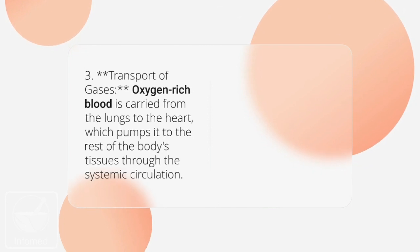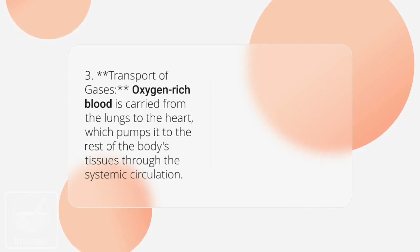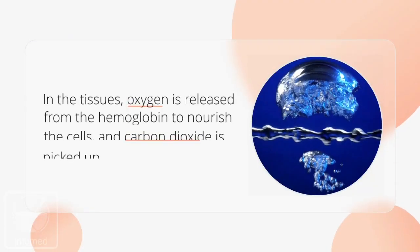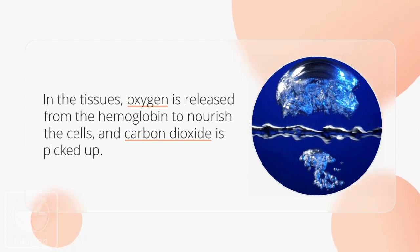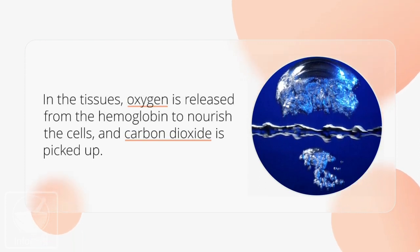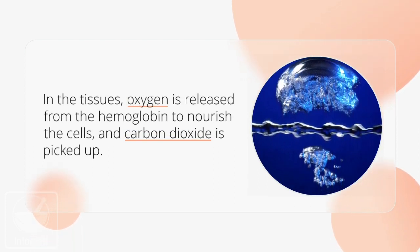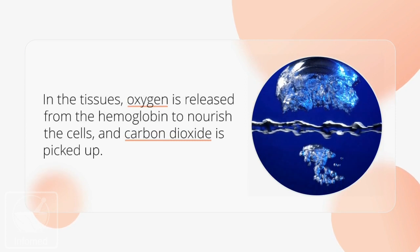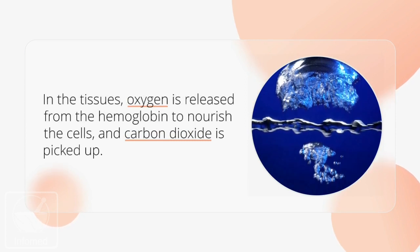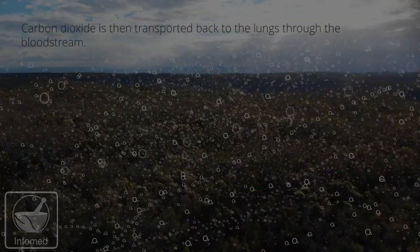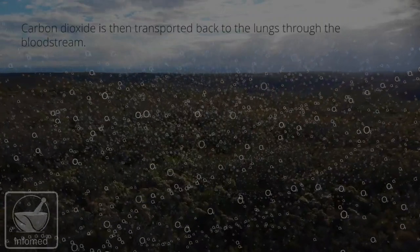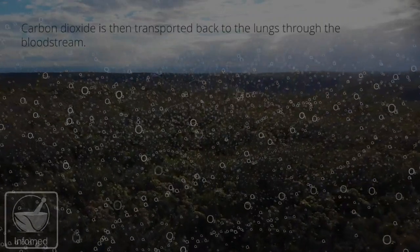Oxygen in the blood travels from the lungs to the heart, which pumps it to the rest of the body's tissues through systemic circulation. In the tissues, oxygen is released from the hemoglobin to nourish the cells, and carbon dioxide is picked up. Carbon dioxide is then transported back to the lungs through the bloodstream.